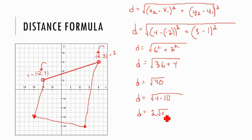Now, usually you would say plus or minus, however there is no such thing as a negative distance. You can't have a negative length, therefore the length of this segment is 2 root 10.